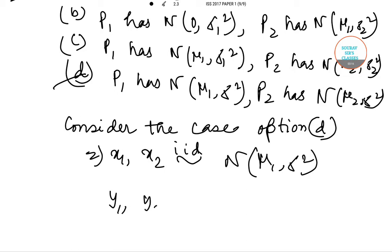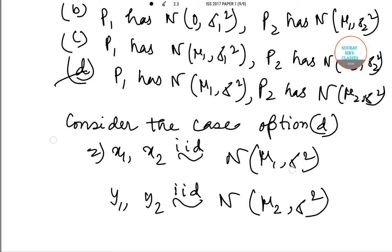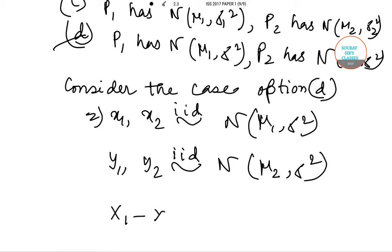y₁ and y₂ are also iid following normal distribution with μ₂ and σ₂². Now, x₁ - x₂ follows normal distribution with 0 mean and 2σ².